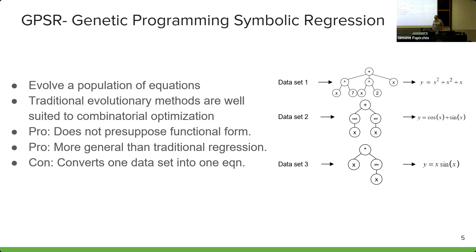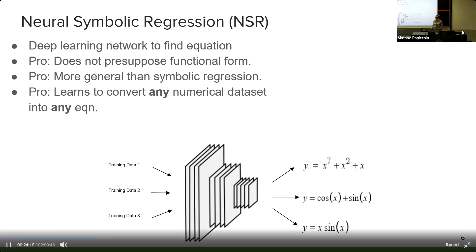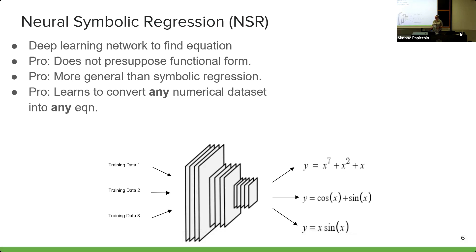However, the downside of GP-SR techniques is that for each data set that you want to learn the equation, you have to completely retrain the algorithm. To compensate for this, a subfield of SR has been investigating using deep learning techniques to do symbolic regression. A single deep learning network is trained and uses transfer meta-learning to accept any numerical data set and transform it into any equation. It has the same advantages of evolutionary techniques in that it doesn't presuppose functional form, but it takes generality a step further because it can intake any numerical data set and does not have to be completely retrained on each data set.